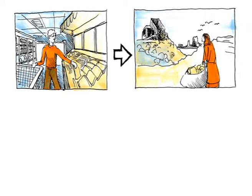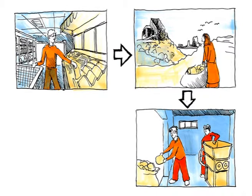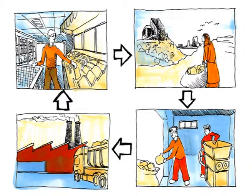First there is the consumer that buys the product. They will throw it on the streets or it goes into the landfills. There, rag pickers start looking for recyclable materials to sell to a middleman. The middleman shreds this material and sells it to factories that make products again.